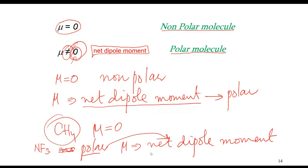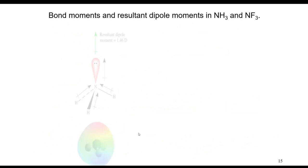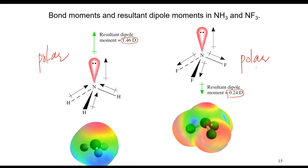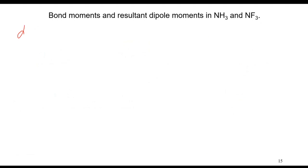Now, in this example: NH3 has a dipole moment of 1.46 Debye, which means NH3 is polar. NF3 has a dipole moment of 0.24 Debye, which means it is also polar. We have two types of molecules to consider: diatomic molecules and polyatomic molecules.